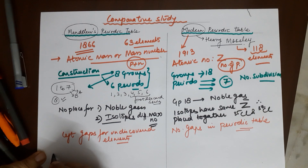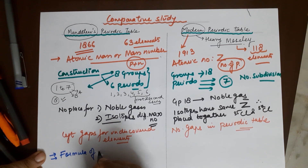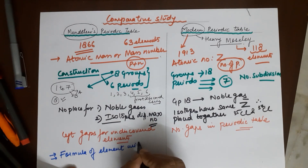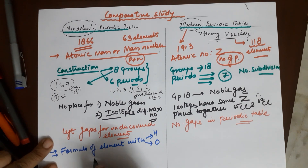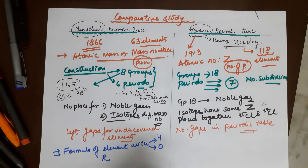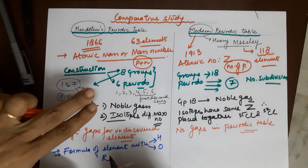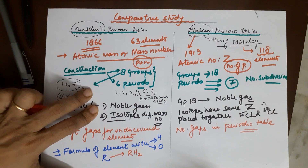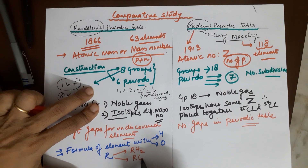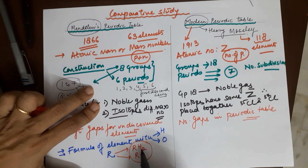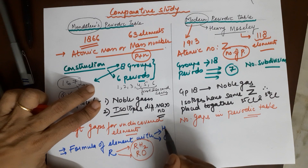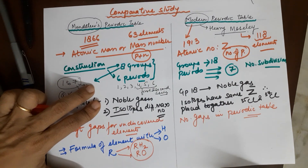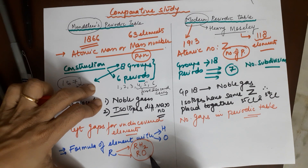The basis of Mendeleev's periodic table was the formula of elements with hydrogen and oxygen. For example, if an element R has a valency of 2, it forms RH₂ with hydrogen and RO with oxygen. Elements that had similar formulas with hydrogen and oxygen were placed together. So the criteria for Mendeleev's periodic table was the chemical formula of elements with hydrogen and oxygen.